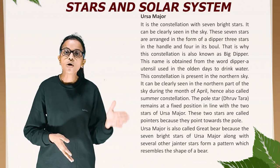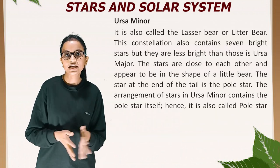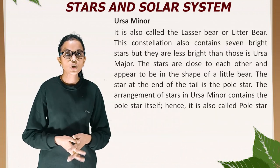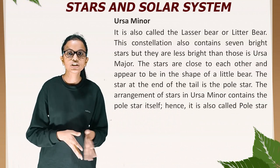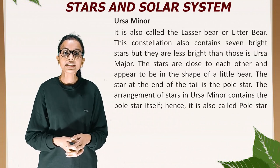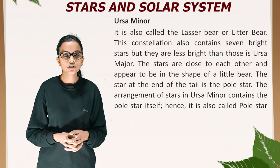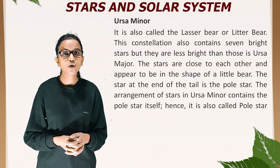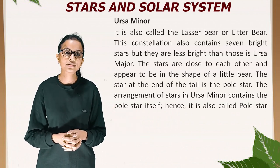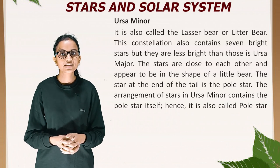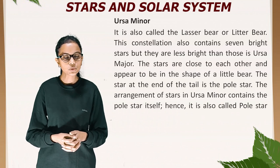Ursa Minor, also called the Little Bear, is a constellation containing seven bright stars, though they are less bright than those in Ursa Major. The stars appear to be in the shape of a little bear and are close to each other. The star at the end of the tail of Ursa Minor is the Pole Star. Because the arrangement of stars in Ursa Minor contains the Pole Star itself, it is also referred to as the Pole Star constellation.